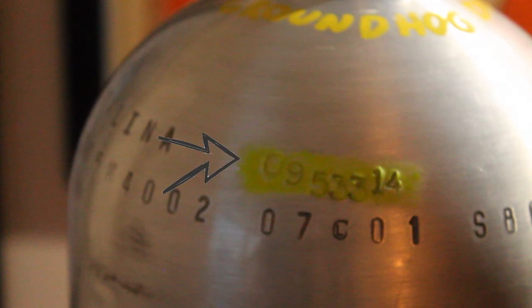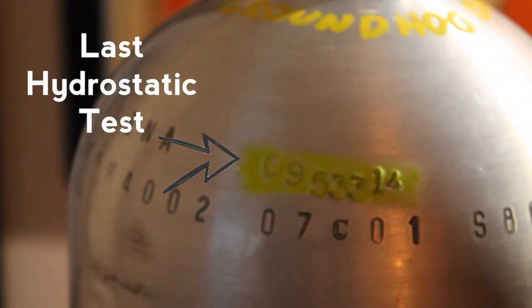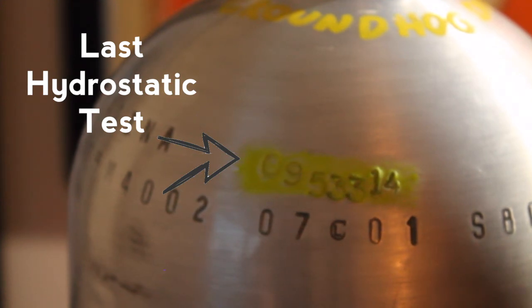And above it is the hydrostatic information. So this was the last hydro that was done on this tank. It was done in 09 of 2014, so 09 meaning September and 14 meaning 2014. The information that is in the middle, this is the service technician, the hydrostatic technician's number that is assigned to them and that gets stamped in the middle. So it's just kind of an ID for them.